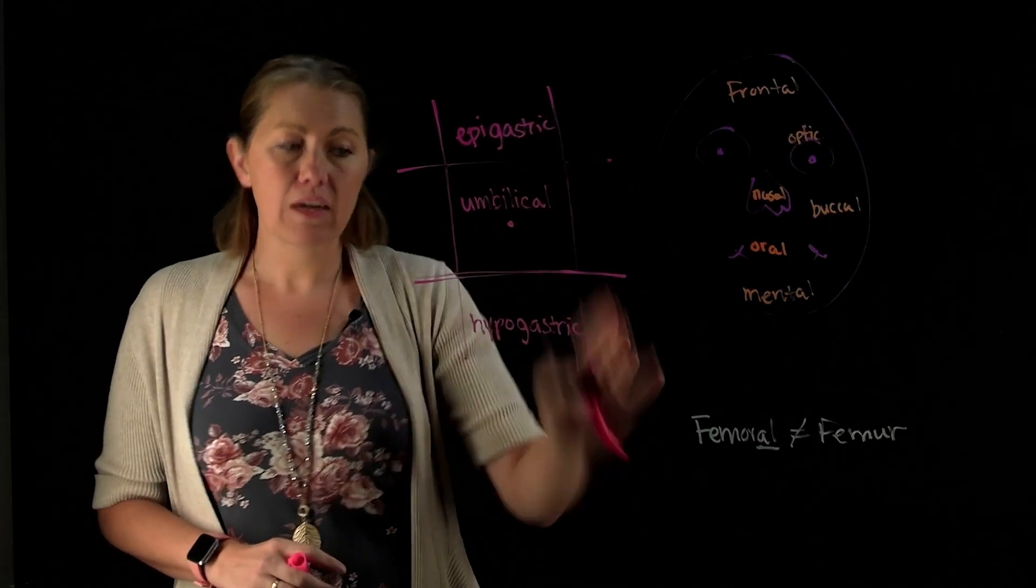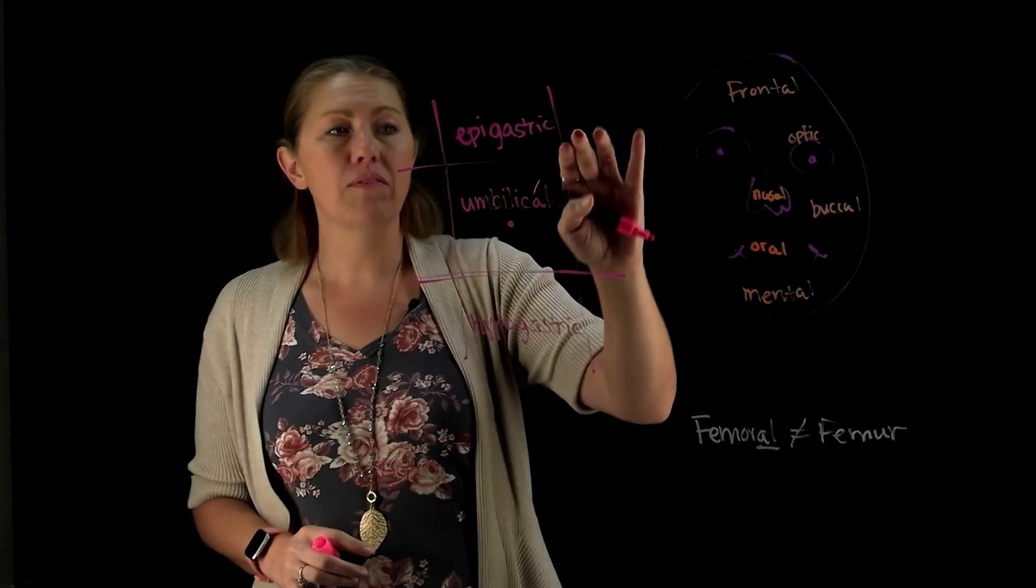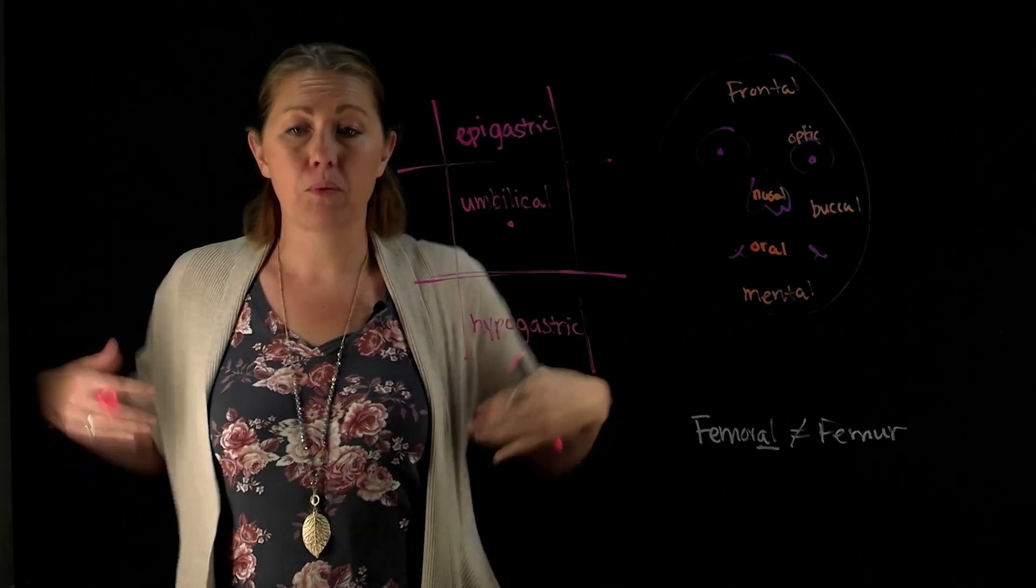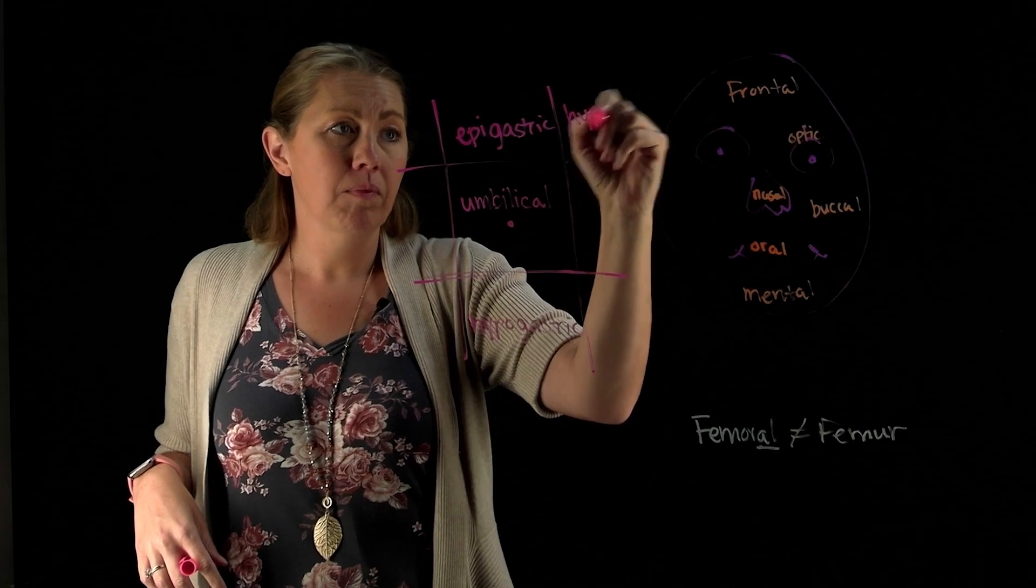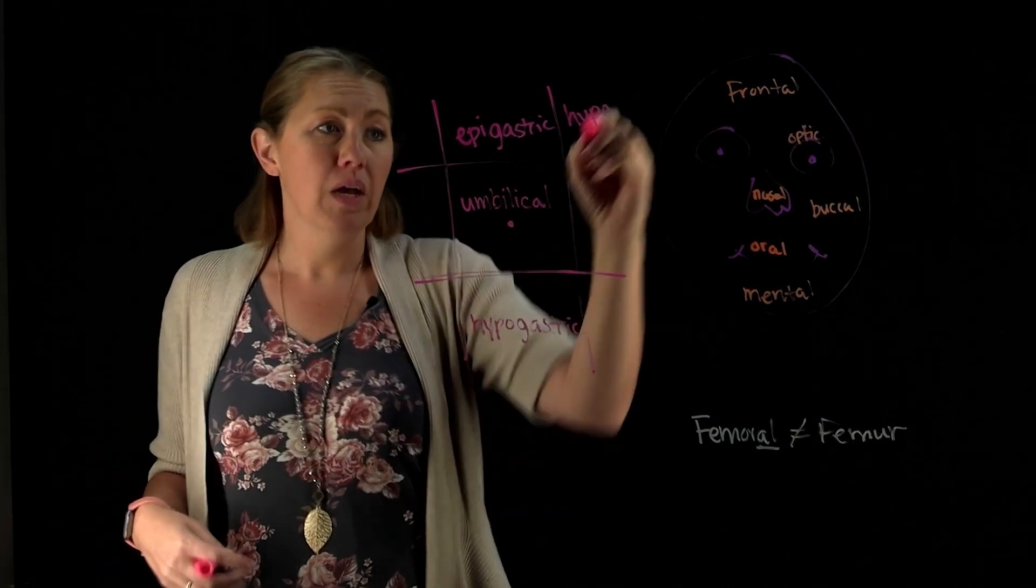If we go off to the sides here, we will have up here the region that's right below the ribs. We're right here. We'll see that hypo again for below, so we're below ribs. Now we're gonna use hypochondriac. Chondro is for the ribs, so we're below ribs.